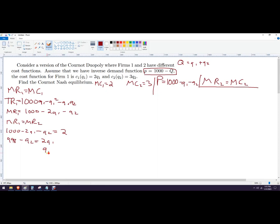And I want to get this function so that it's all a matter of quantity 1, what quantity 1 is going to do. So we're going to divide through by 2. So half there is 499 minus 1 half Q2. You could write that as 0.5 if you wanted to. So this is our best response function here.